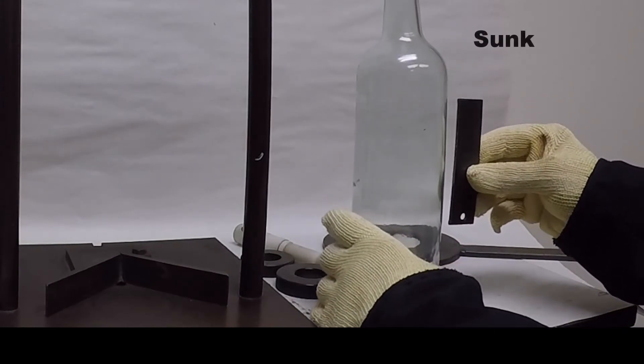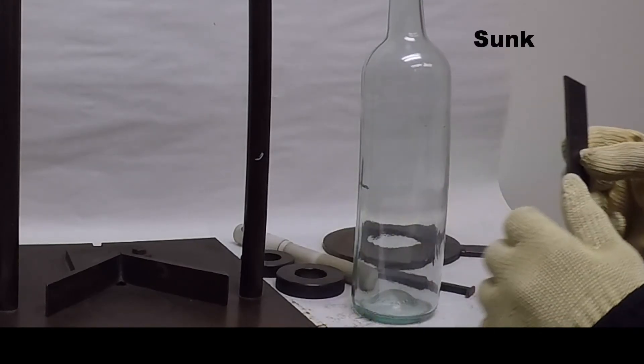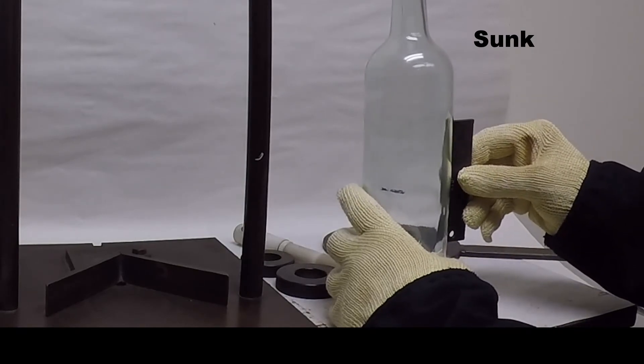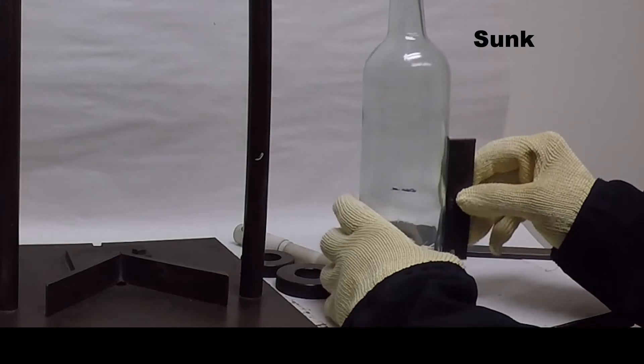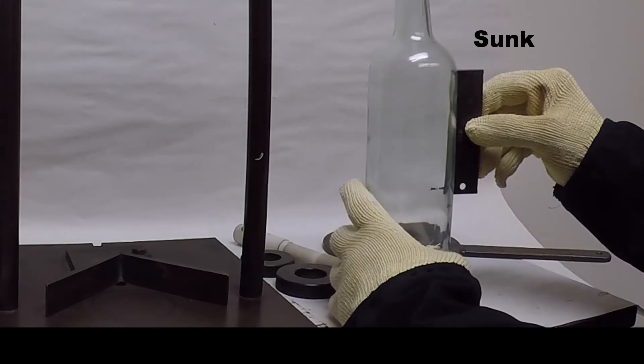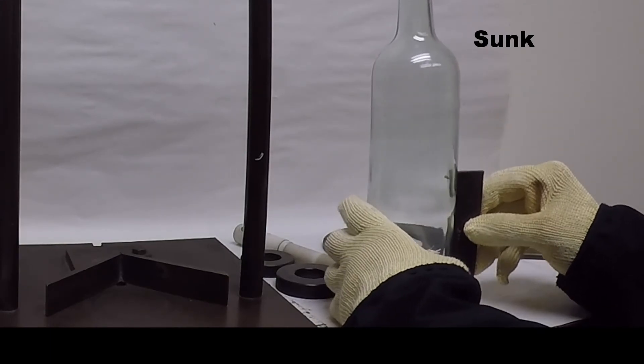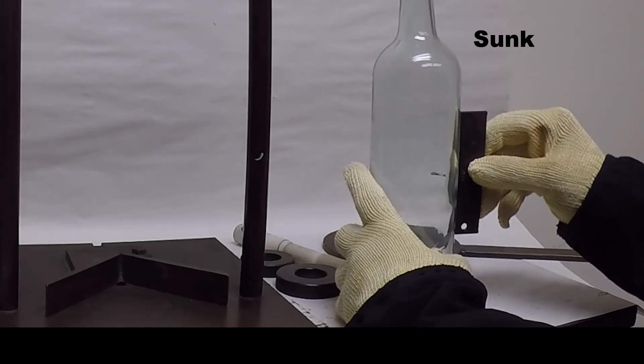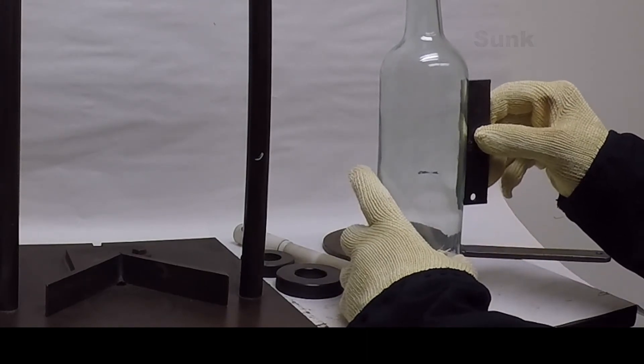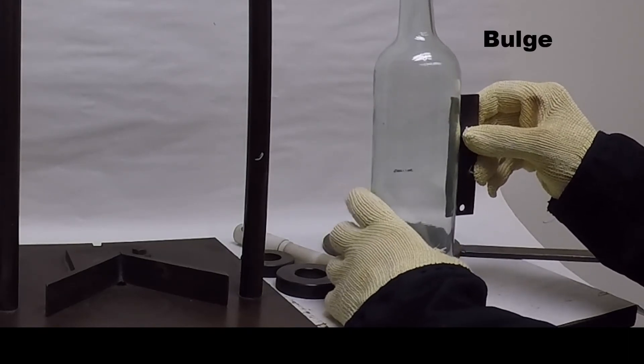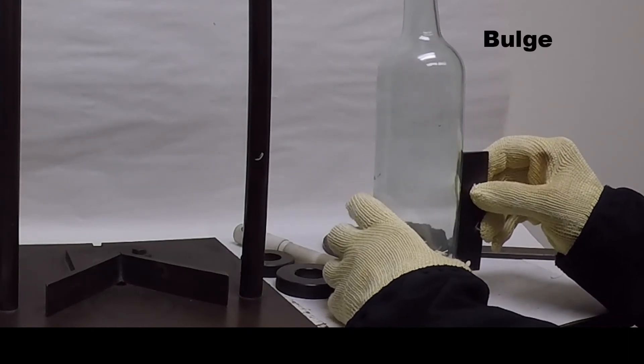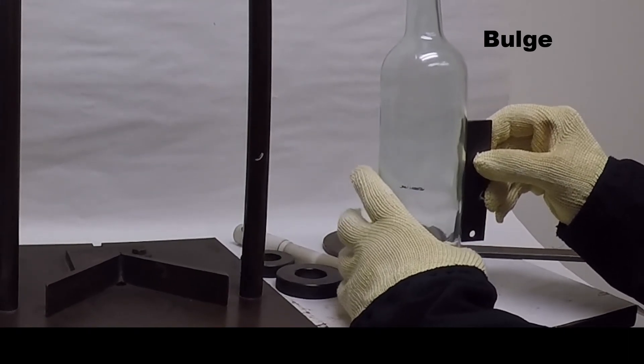Sink bulge gauge, it has a 15 thousandths cut in and a 15 thousandths cut out. This one, the entire label panel of the bottle is checked. The gauge should rock at all spots. The bulge gauge with the cut in should pass over the entire label panel and not rock.